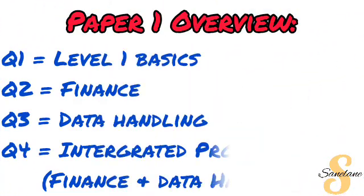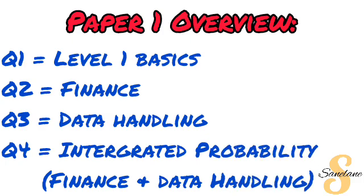Starting with Paper 1, we are looking at how your question paper will be laid out. You're going to have four questions. In Question 1, you'll be looking at the Level 1 basic questions — topics like numbers and calculating numbers, as well as patterns. In Question 2, you have Finance, and we are going to go into detail on what you need to study under the Finance topic.